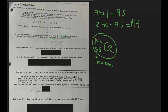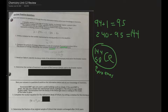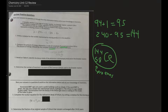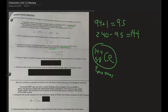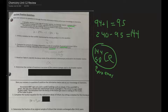Number three: based on table N, identify the decay mode of the plutonium radioisotope produced in the breeder reactor. You won't find plutonium there, but the question says it goes from uranium-238 to plutonium-239. So you want to look for the decay mode of uranium-238, which in this case is alpha.